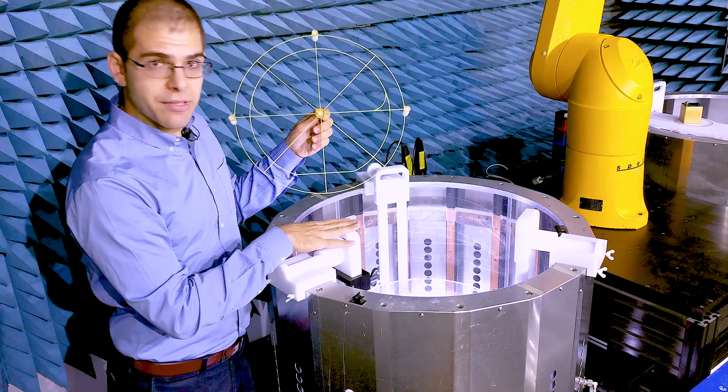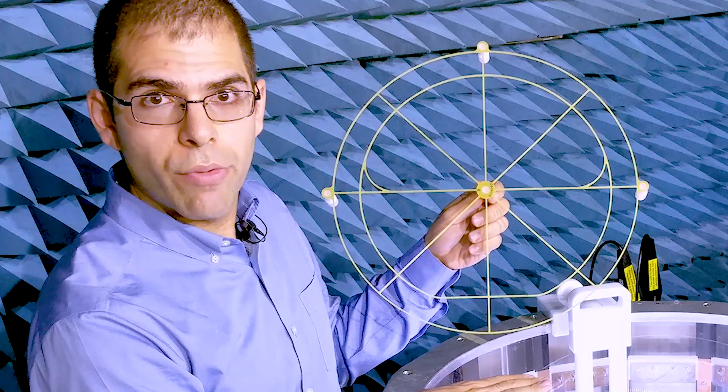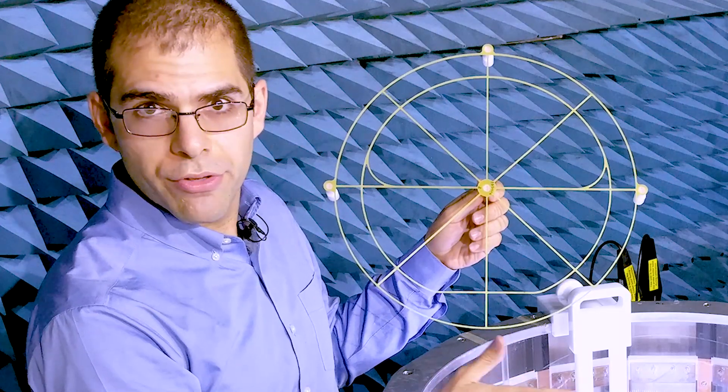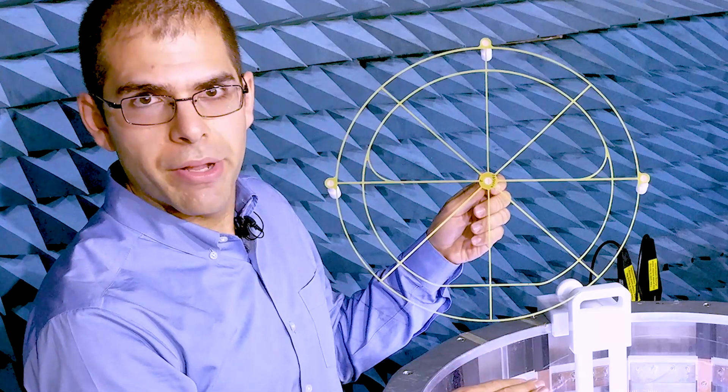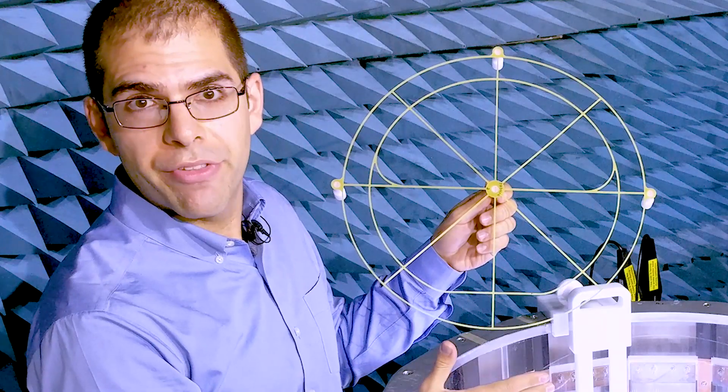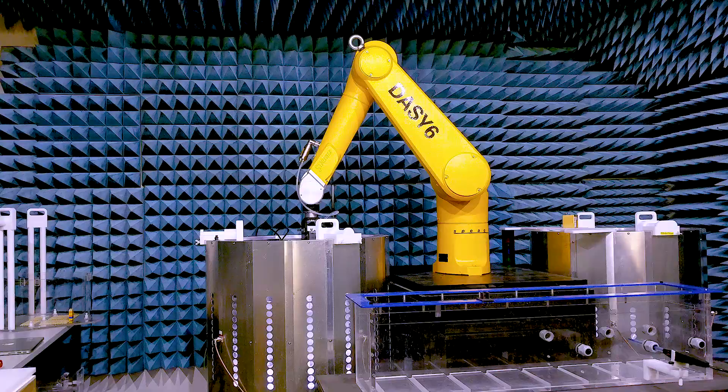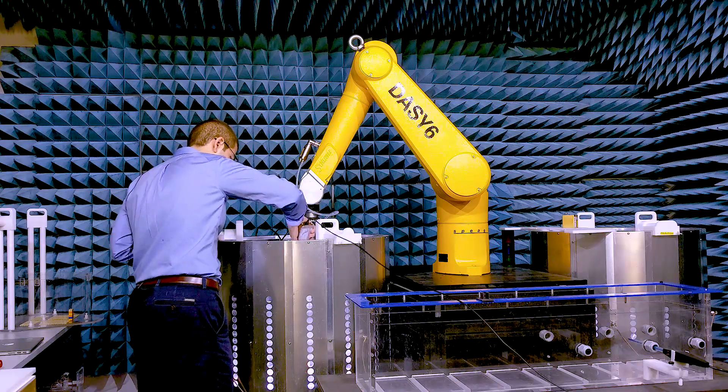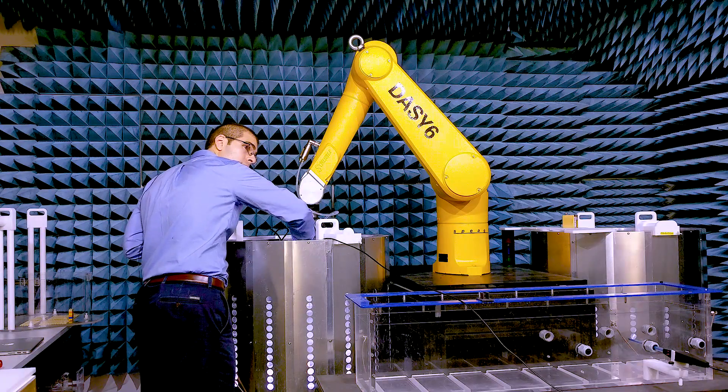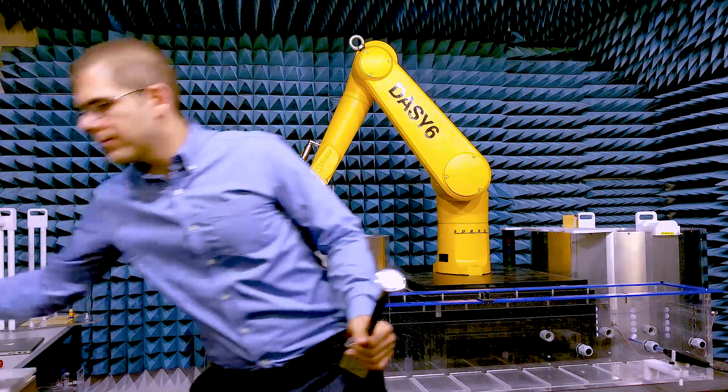Today, I'll be using 0.47 Siemens per meter tissue-simulating liquid, the same as we used in episode one with the PI-X model. But you could also do this at lower or higher permittivity liquids. I use the portable dielectric assessment kit, or DAX, from SPEAG to check the conductivity at 64 or 128 MHz.